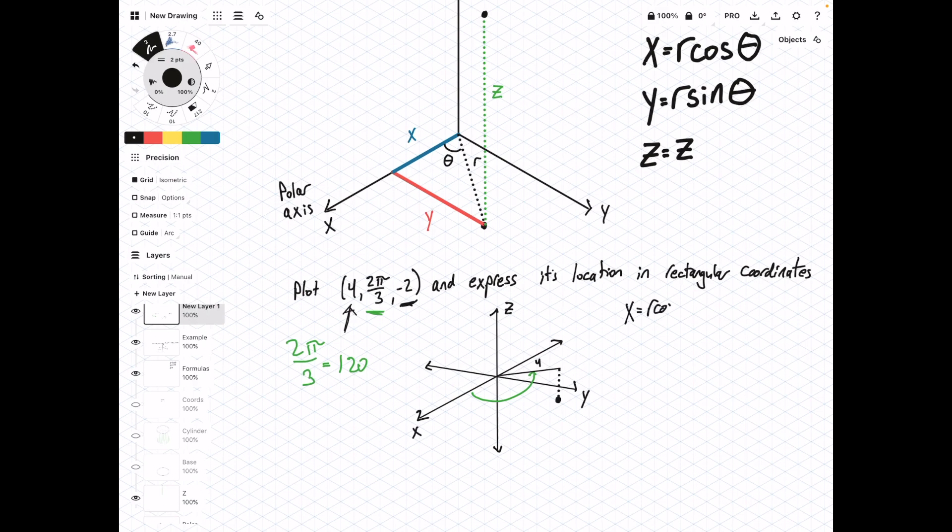So x equals R cosine theta equals 4 cosine of 2 pi over 3. This is going to equal 4 times negative 1 half, and that's going to be negative 2.